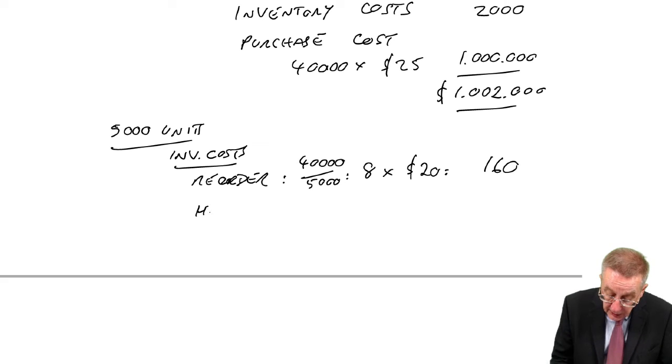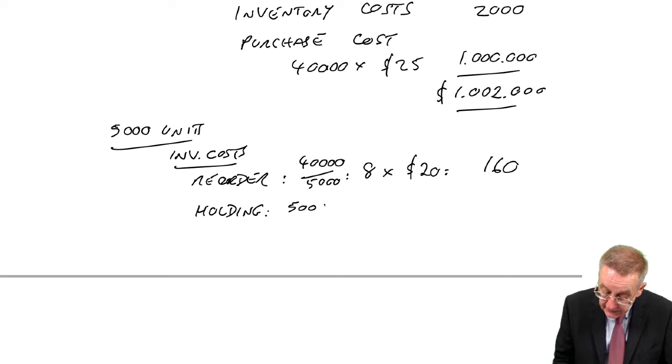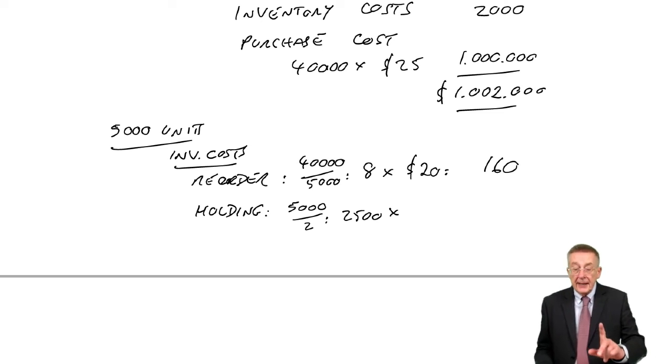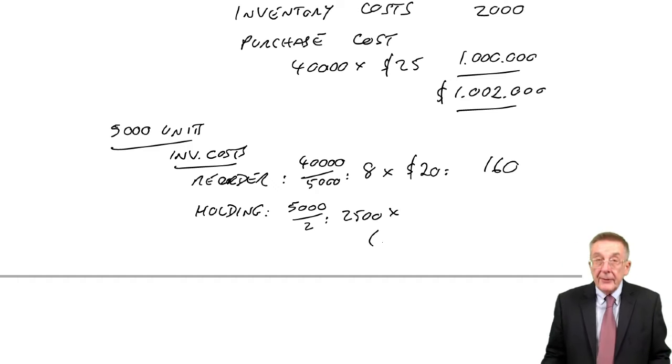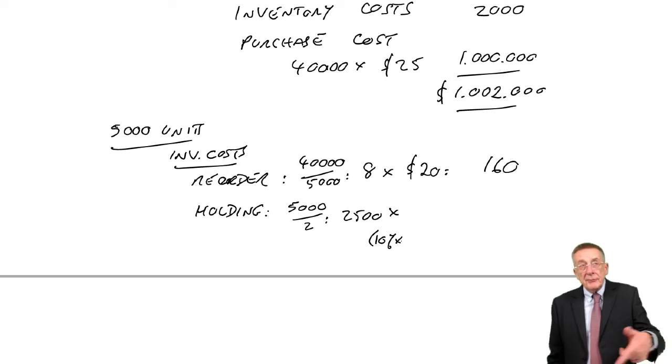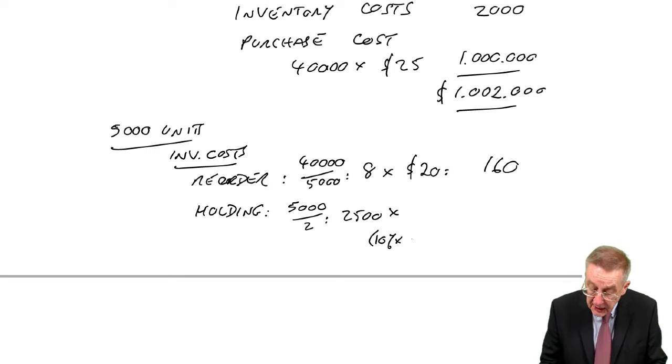What about the holding cost? Well, if we order 5,000 each time, the average inventory will be 2,500 units. The cost per unit, a tiny little trick here. Remember, the holding cost was 10% of the purchase price. But if we order 5,000 each time, we get a 1% discount.